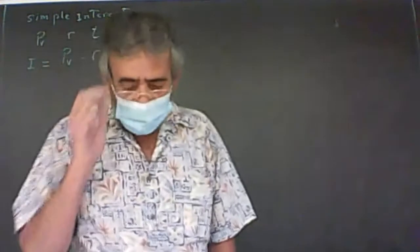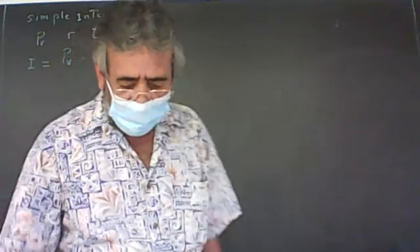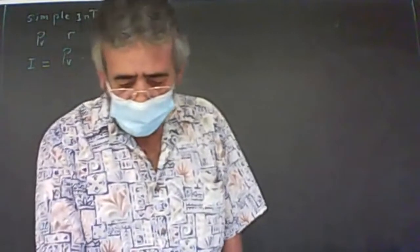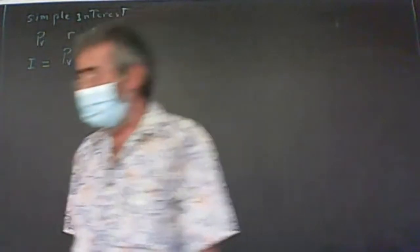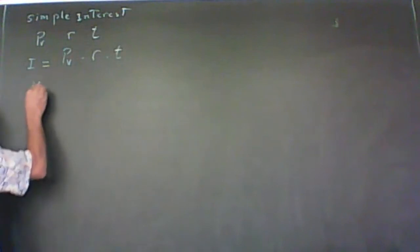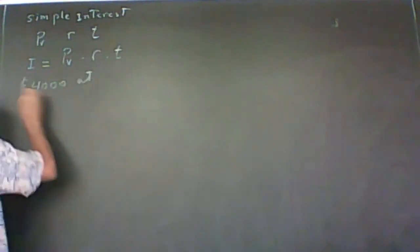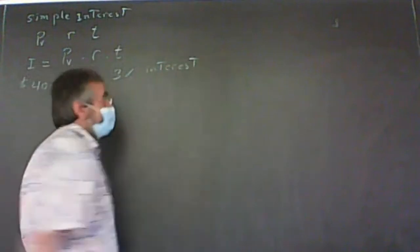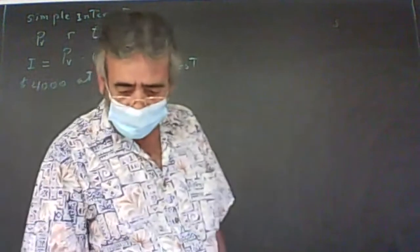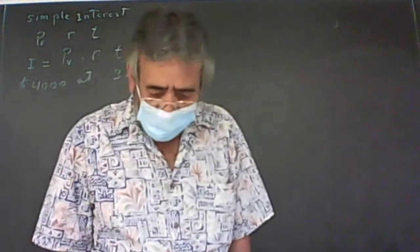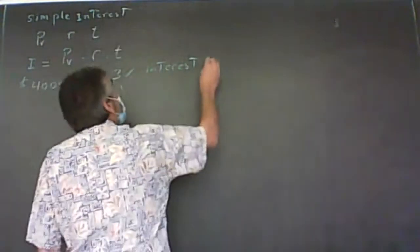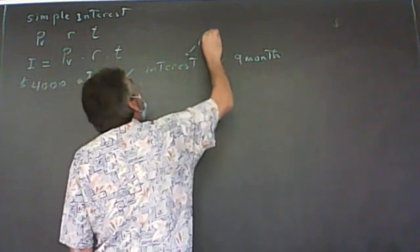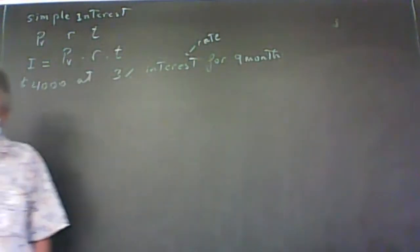Let's take a look at some examples applying this formula. To finish her apartment, Maggie Chan borrowed $4,000 at a 3% interest rate from her parents for nine months. We need to figure out how much interest she has to pay on those $4,000.